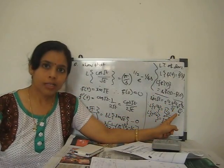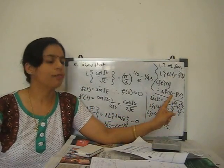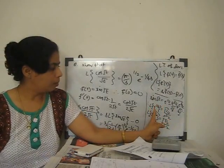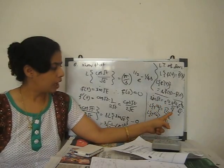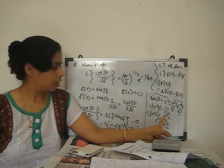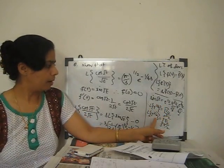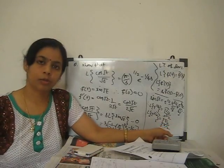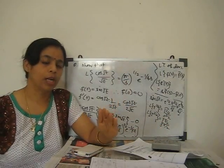Taking the Laplace transform of each term individually: L{t^(1/2)} = Γ(3/2) / s^(3/2), L{t^(3/2)} = Γ(5/2) / s^(5/2), and so on for each successive term.